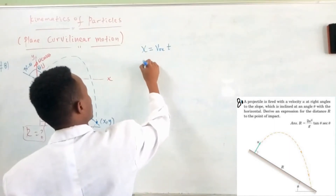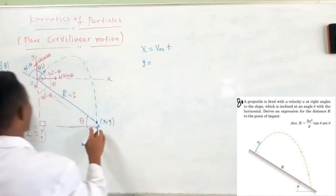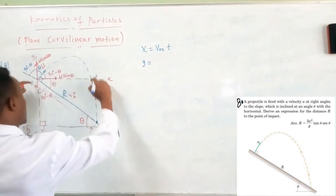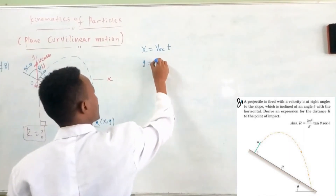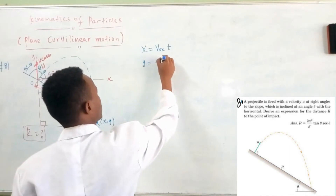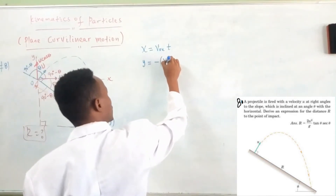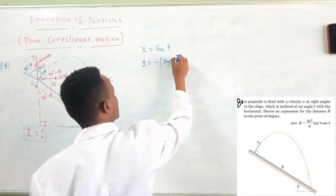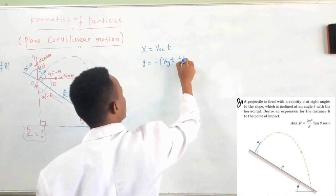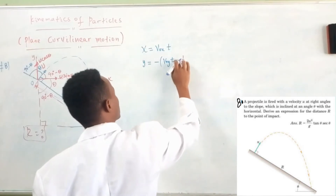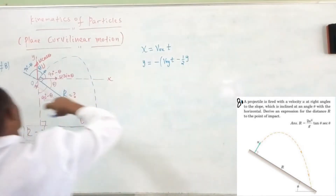y equals to, at this point, which is the path where you are negative. So, we can multiply by the negative part. Negative v-sub-O-y times t, plus one-half gravity times t squared. That is due to gravity — rendering motion.